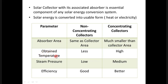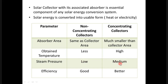The second parameter is obtained temperature. In non-concentrating collectors, since the energy is not concentrated, the obtained temperature is very low. In concentrating collectors, the obtained temperature is much higher. Regarding steam pressure — when collectors are used to generate steam — non-concentrating collectors produce very low steam pressure, while concentrating collectors produce medium steam pressure.